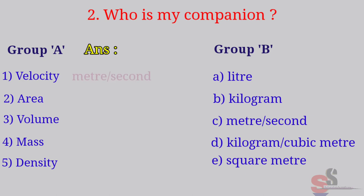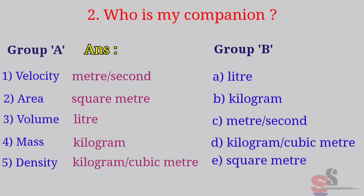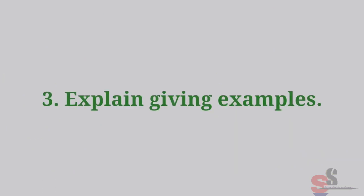Right answers: Velocity - Meter per second. Area - Square meter. Volume - Liter. Mass - Kilogram. Density - Kilogram per cubic meter. Question 3.